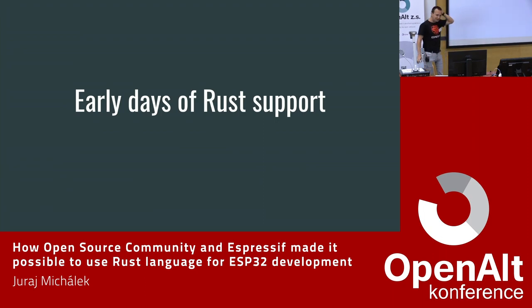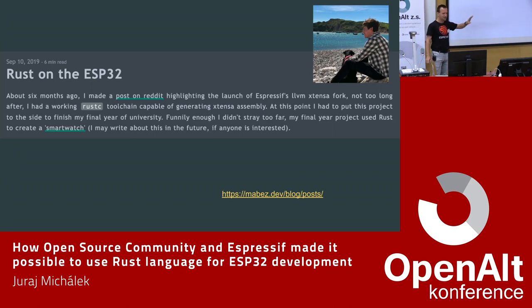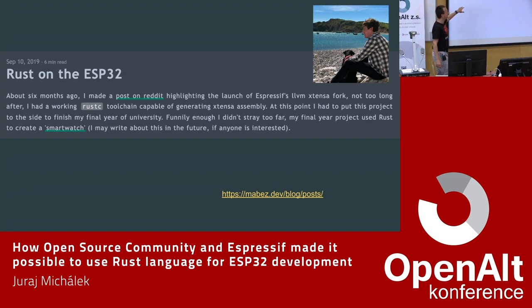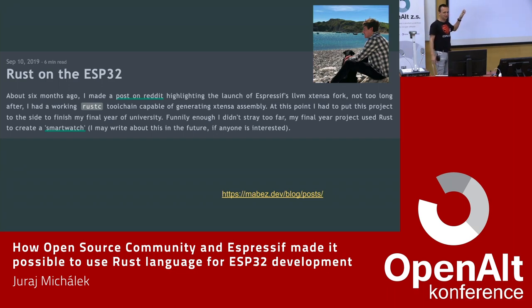Let me tell you about the early days of Rust support. There's a post from Scott Mabin, 'Rust on ESP32', which I consider something like Linus Torvalds' email when he first started writing about Linux. Scott wrote that he got an LLVM Xtensa fork working and was able to get the Rust compiler generating Xtensa assembly, then had to put the project aside to finish his final year at university.